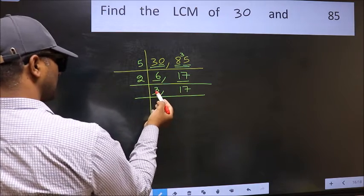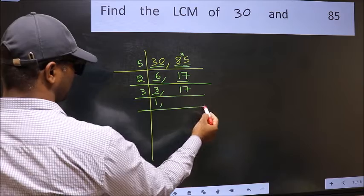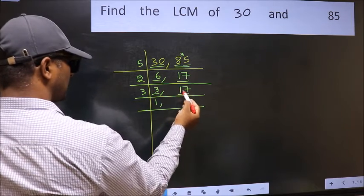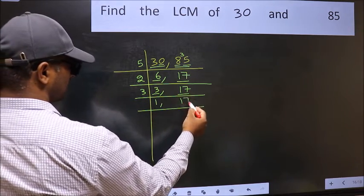Now here we have 3. 3 is a prime number, so 3, 1 is 3. The other number, 17, not divisible by 3, so you write it down as it is.